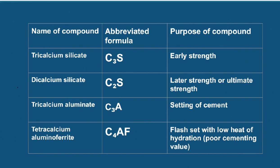Firstly, R.H. Pogue is a person who identified some compounds which are formed in the kiln while formation of cement. He observed four compounds and he named them as alite, belite, celite, and felite.